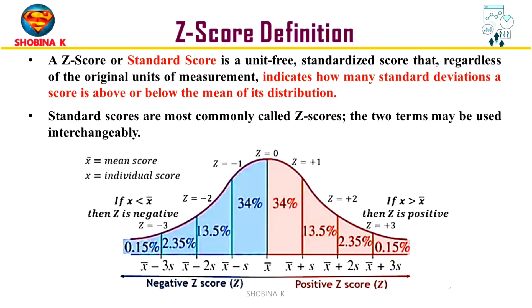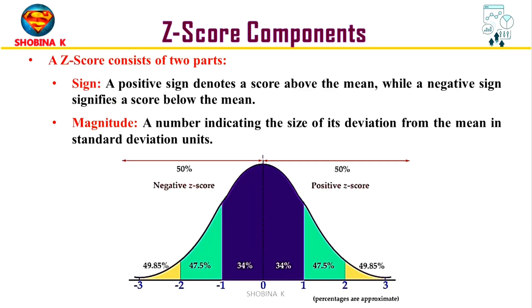In other words, the z-score measures the dispersion of data. Z-score is measured in terms of standard deviations from the mean. Z-score consists of two parts, which are sign and magnitude.